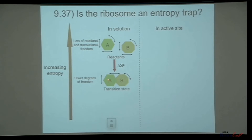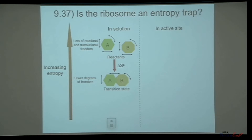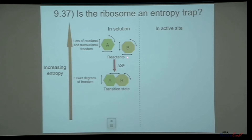However, in the transition state, when a bond begins to form between the two reactants, now the two reactants are no longer independent of one another. And so there are fewer degrees of freedom — less ability to rotate or move about — less rotational and translational freedom. In other words, less entropy. So in the uncatalyzed reaction, formation of the transition state is associated with a negative entropy change.